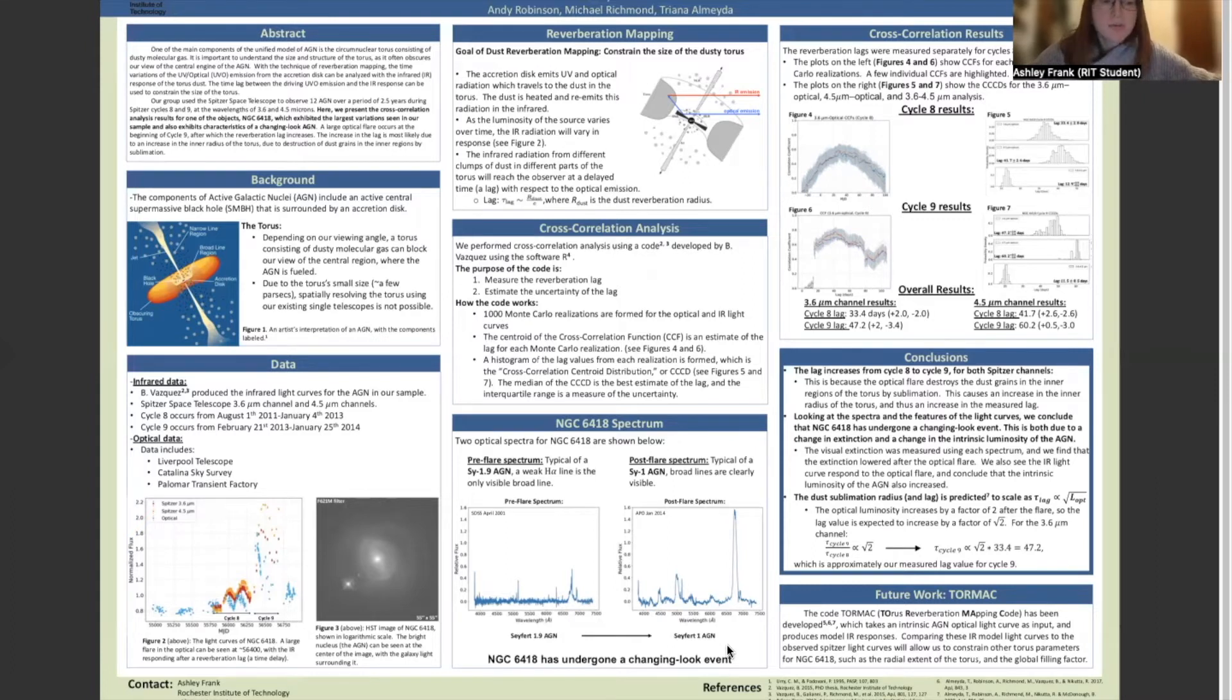I also performed cross-correlation analysis separately for each cycle, cycle eight and cycle nine, and I found that the lag increases from cycle eight to cycle nine for both Spitzer channels. This is because the optical flare destroys the dust grains in the inner regions of the torus due to sublimation, and that causes an increase in the inner radius of the torus, and thus an increase in the lag I measure.